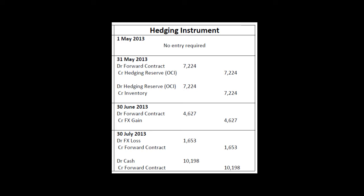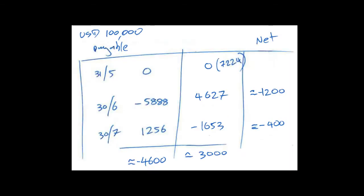And it's probably worthwhile just showing the net effect of all of this, which is in the underlying, so 31st of the 5th, 30th of June, 30th of July. Zero profit, nothing here, nothing the 1st of May, 30th of June, we made a loss of 5,888. We made a gain here of 1,256. So in the underlying, no profit or loss in that point, a loss of nearly 6,000, a profit of nearly 1,200 or just over 1,200. So overall, on the underlying position, if we hadn't done anything, we would actually have a loss showing of $4,600.